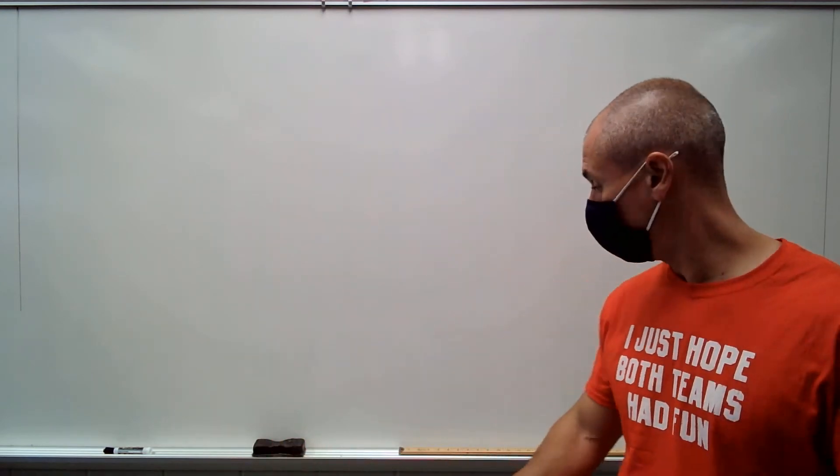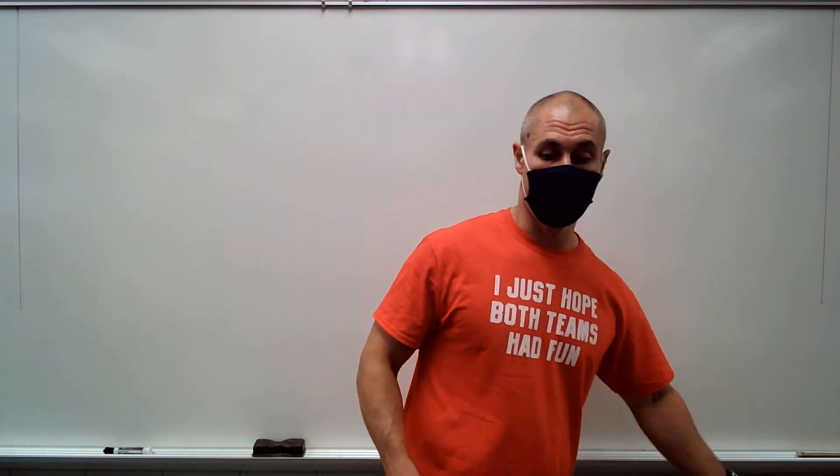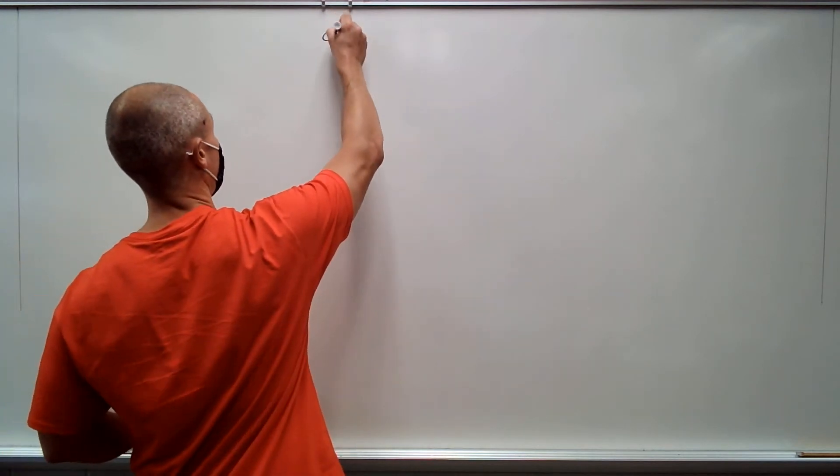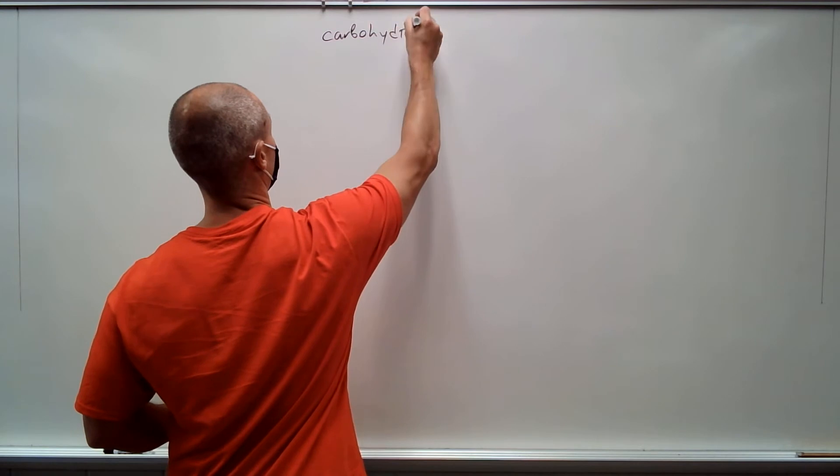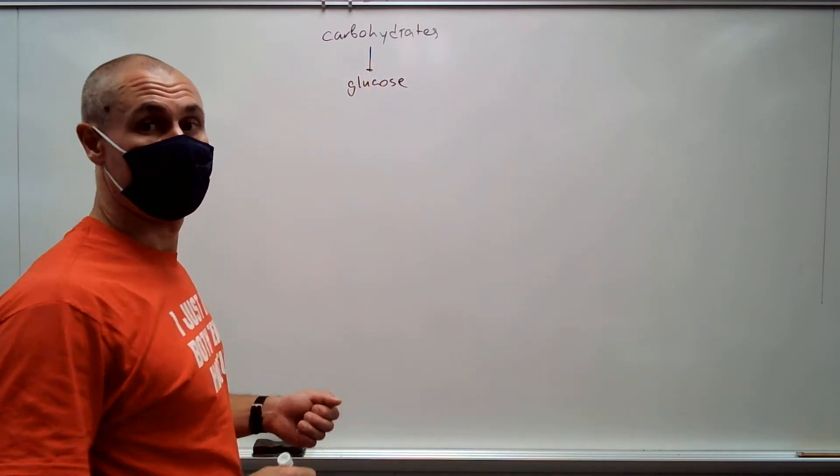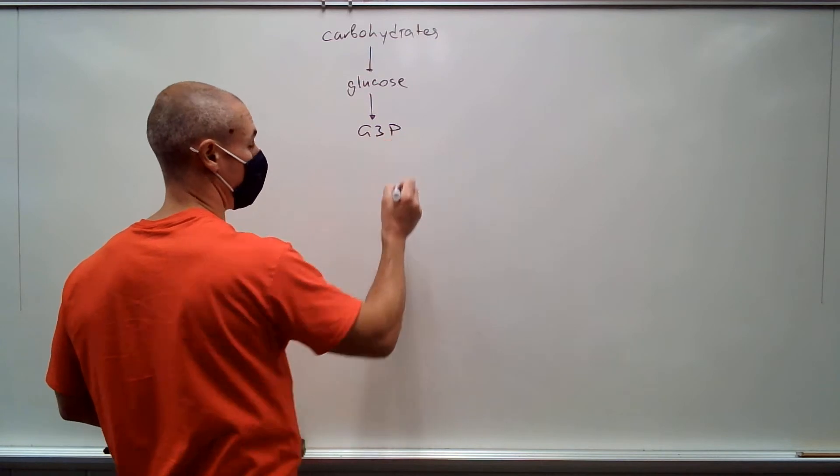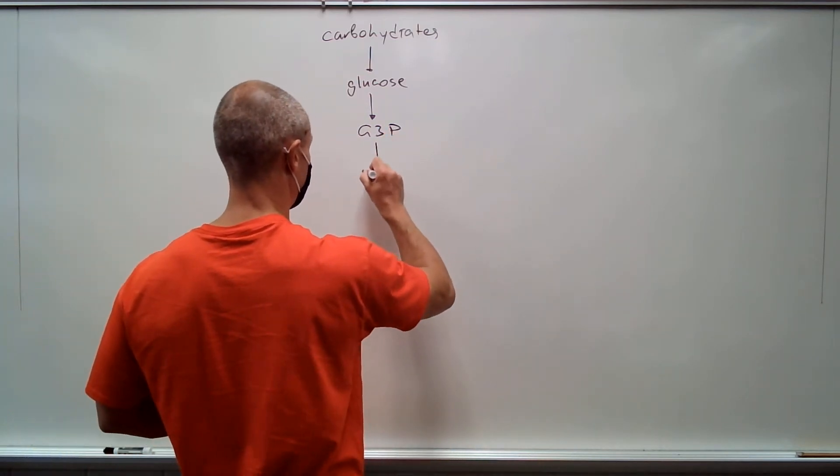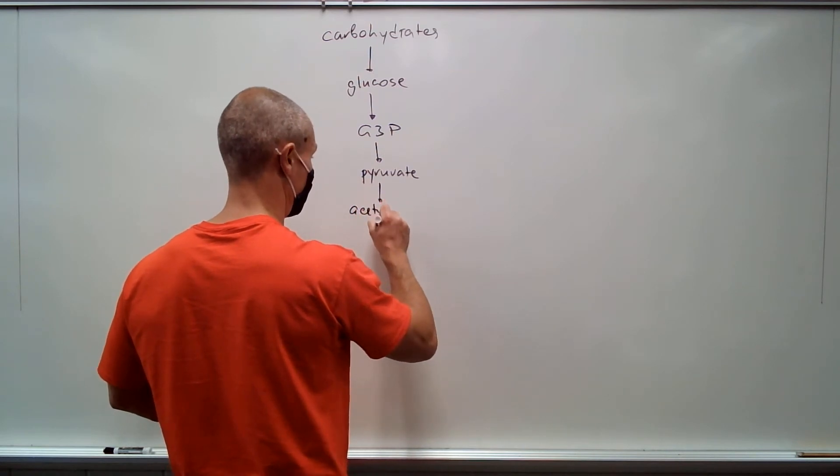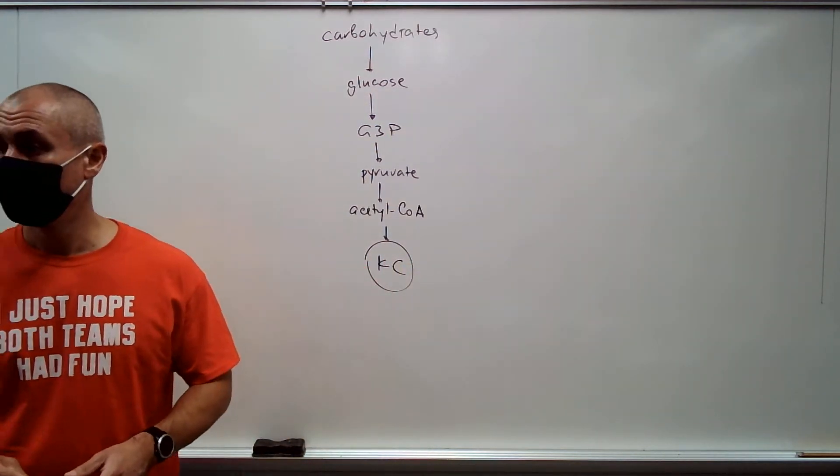As a reminder, last week we were talking about cellular respiration. In that process, we have carbohydrates that are digested in the intestine to glucose. Glucose is further broken down to glyceraldehyde 3-phosphate, G3P, which is converted to pyruvate. Finally, pyruvate is converted to acetyl-CoA, which enters the Krebs cycle. This is your straightforward catabolism of carbohydrates.